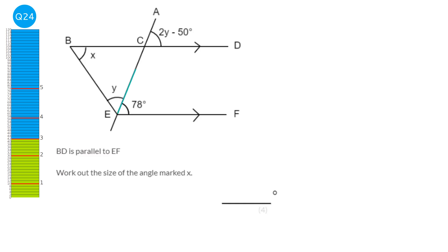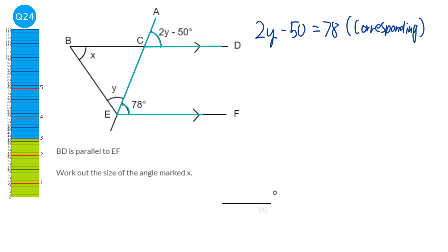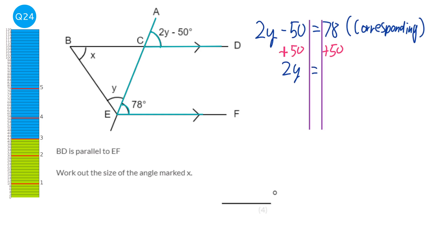We have two sets of parallel lines with a transversal, giving F-angles — these are corresponding angles. So 2y − 50 = 78 (corresponding angles are equal). Adding 50 to both sides: 2y = 128. Dividing by 2: y = 64.